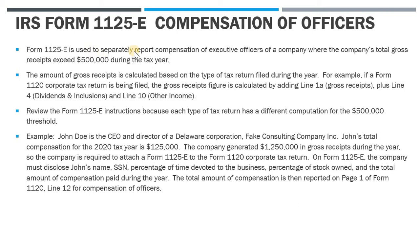Generally, Form 1125-E is used to separately report compensation of officers where the company's total gross receipts exceed $500,000 during the year. How you calculate gross receipts depends on the type of return filed. For a 1120 corporate return, the gross receipts figure is calculated by adding line 1a, line 4, and line 10. It's a different computation for an 1120-S return.